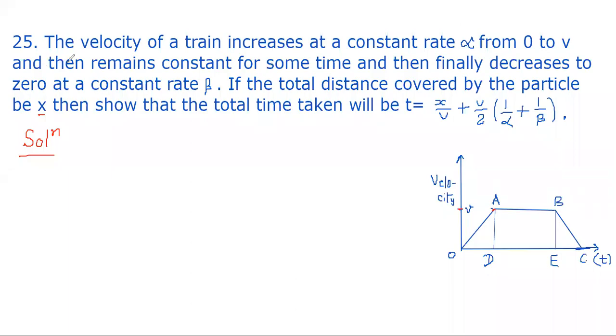IEIT series question number 25. The velocity of a train increases at a constant rate alpha from 0 to v, then remains constant for some time, and then finally decreases to zero at a constant rate beta. If the total distance covered by the particle is x, then show that the total time taken will be t = x/v + (v/2)(1/alpha + 1/beta).